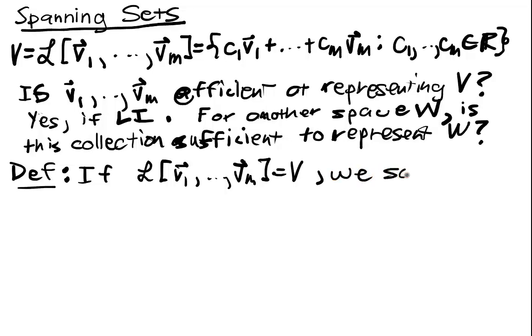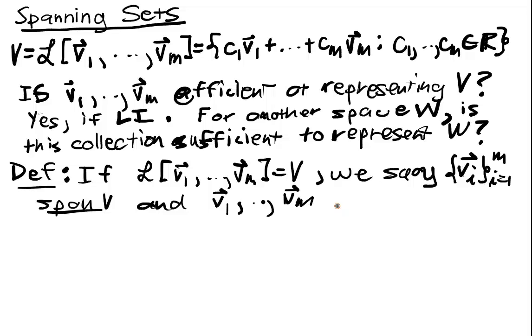we say that the V eyes, as a collection, span V, and we also say that V1 up to Vm is a spanning set for V.